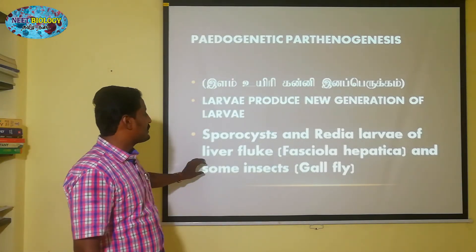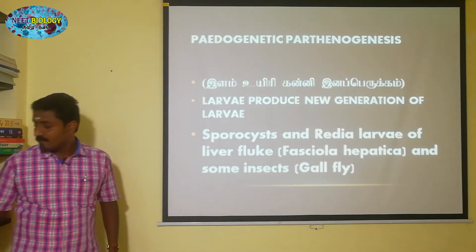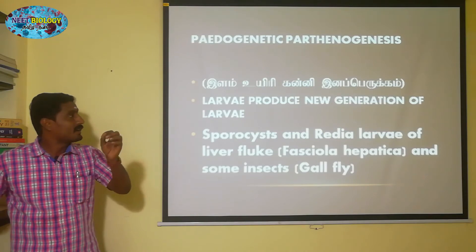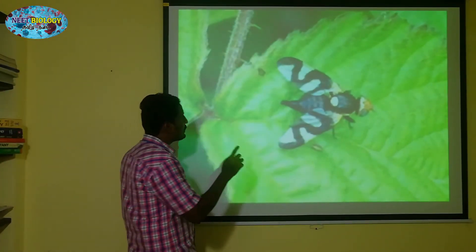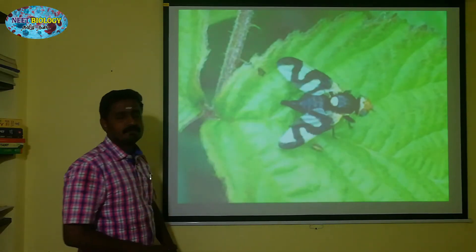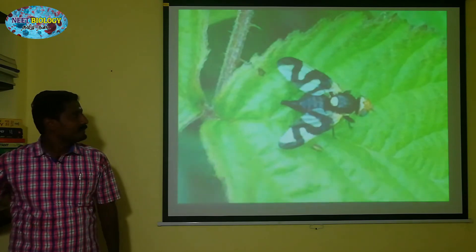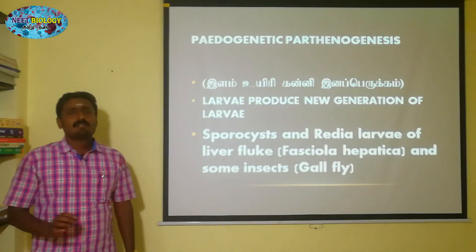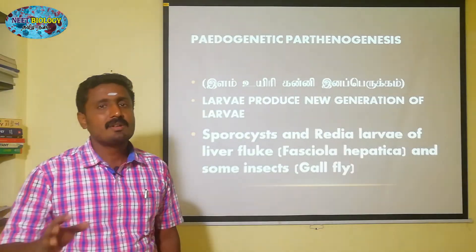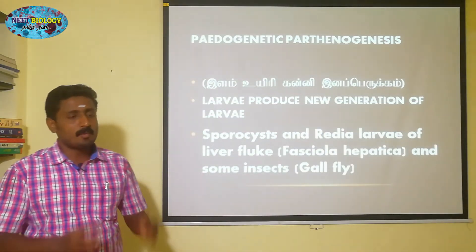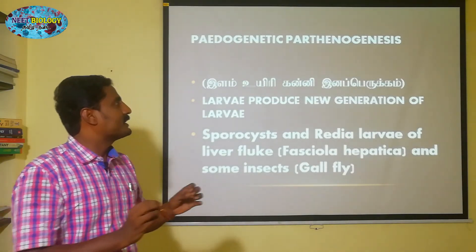In some insects — gallfly is one of them. Gallfly has larvae, and this larva is undergoing normal division to produce another larva. This is the pedogenetic parthenogenesis.